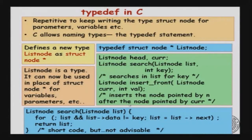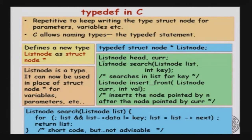Now let us look at some syntactic conveniences C provides. Repeatedly typing struct node and things like that is too much to type. C allows you to define short names for types using the typedef keyword. For example: typedef struct node* list_node. This means list_node is another name for struct node star. So instead of writing struct node star head, you can write list_node head. It is not required, but it is convenient.